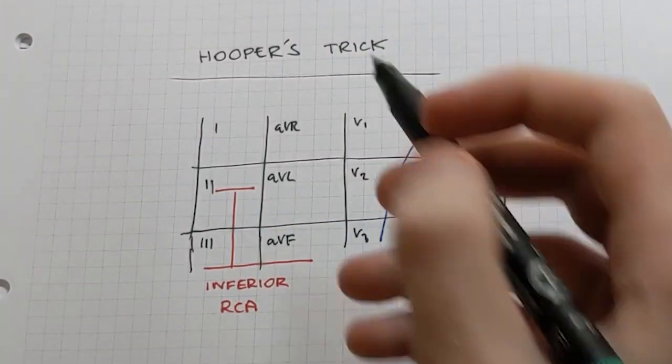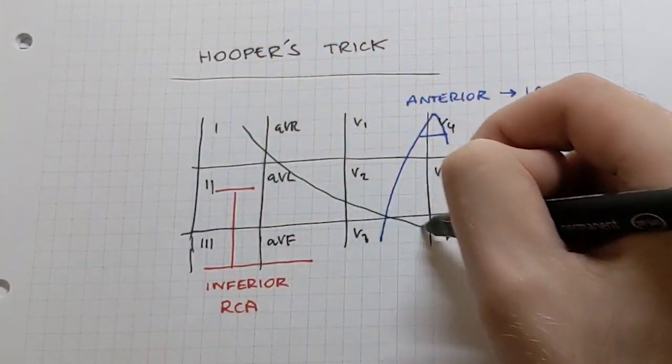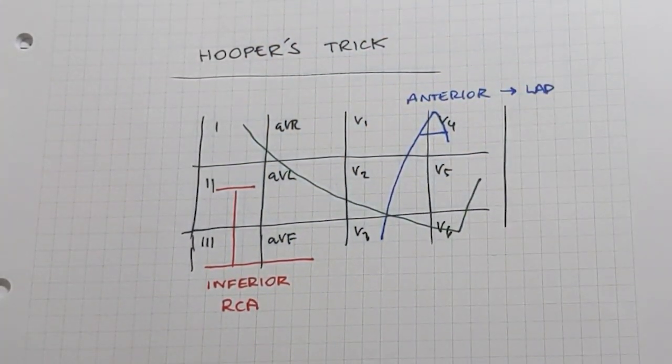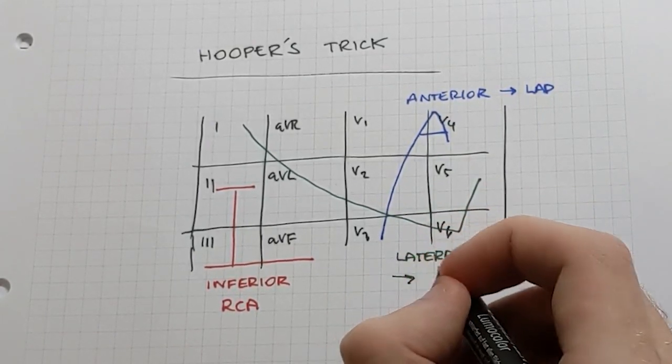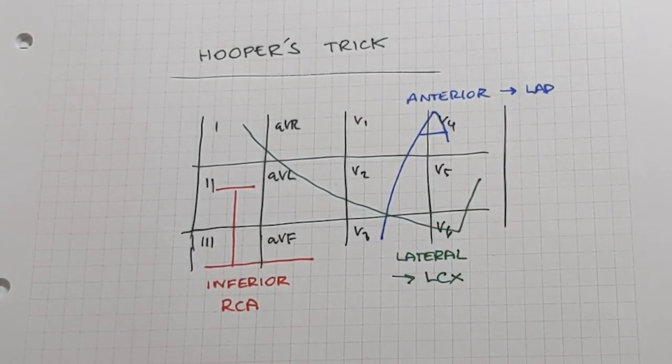And then lastly we've got one AVL V5 and V6, so if we just draw a big L that sweeps down like that, those are lateral leads, and usually they're going to be the left circumflex artery.